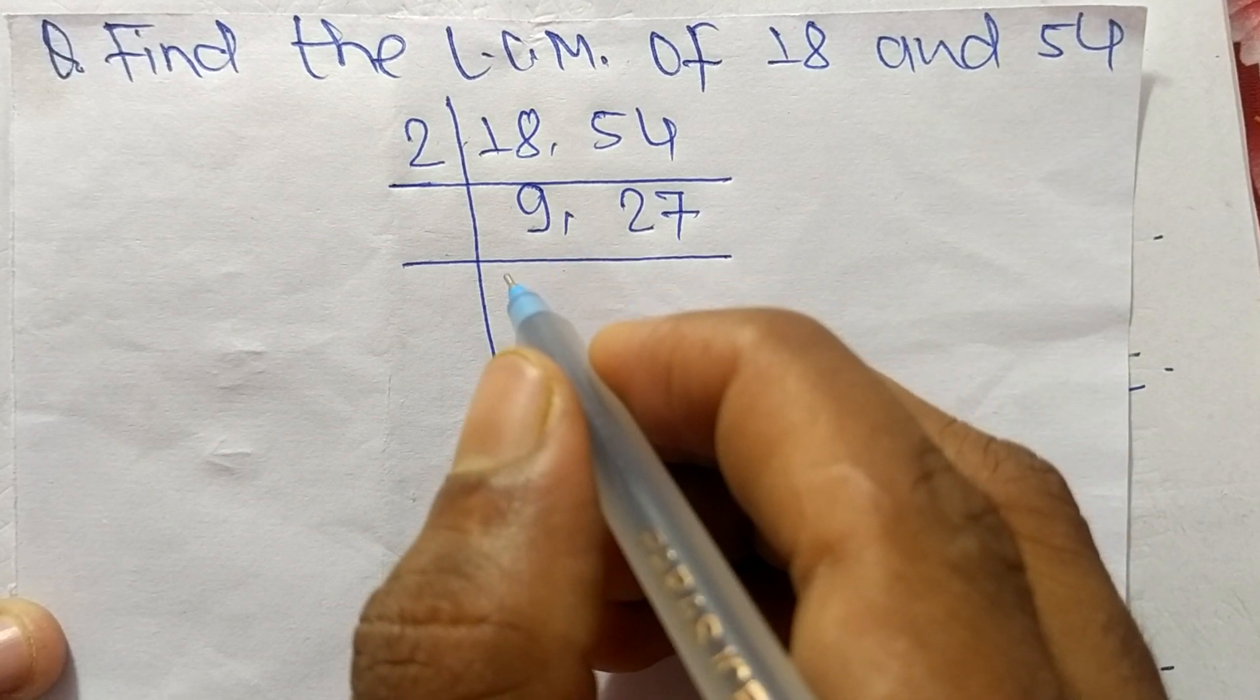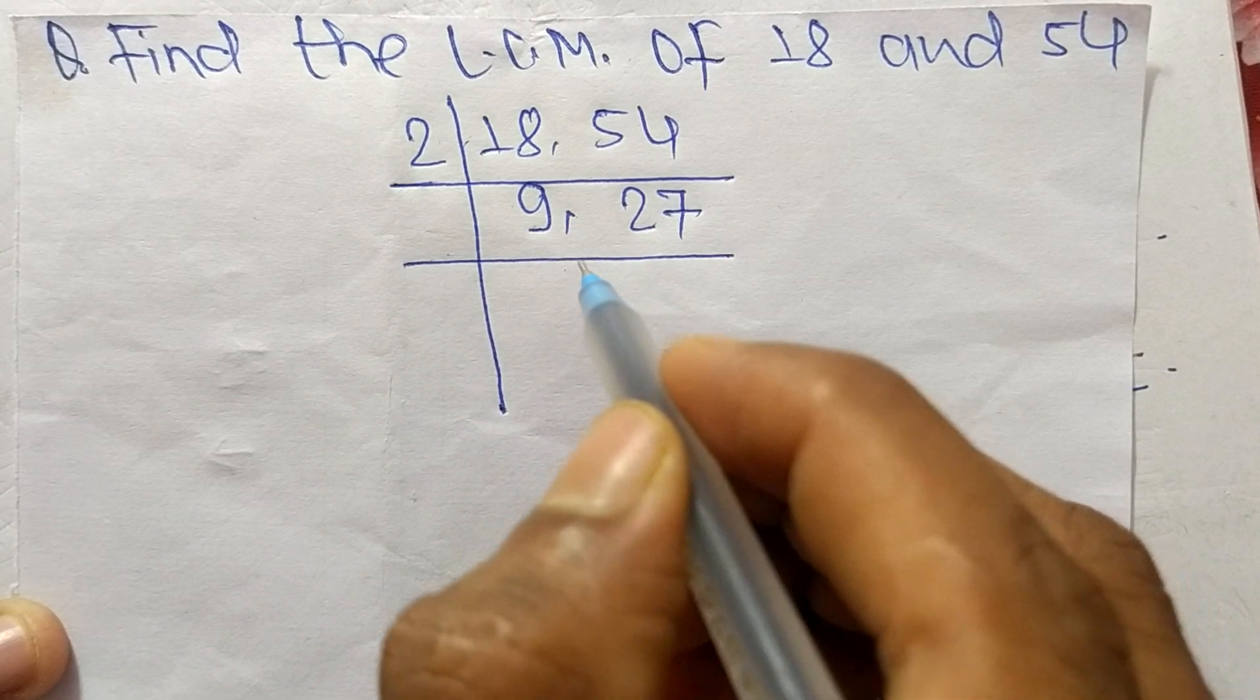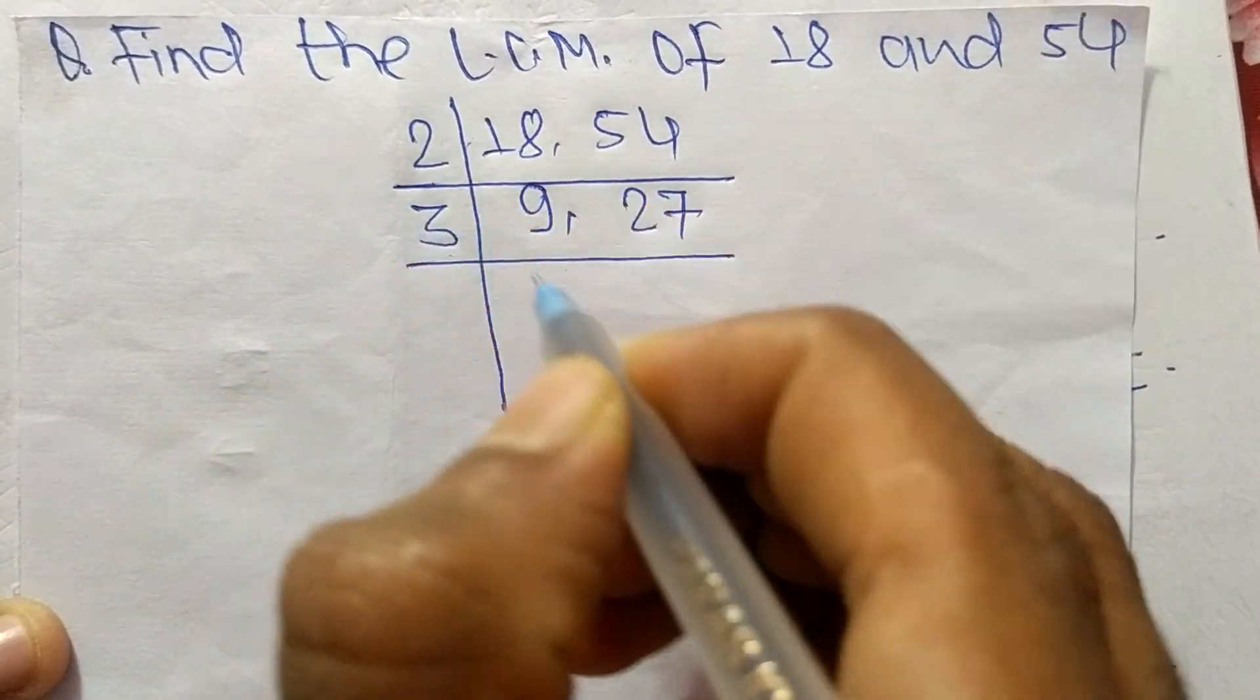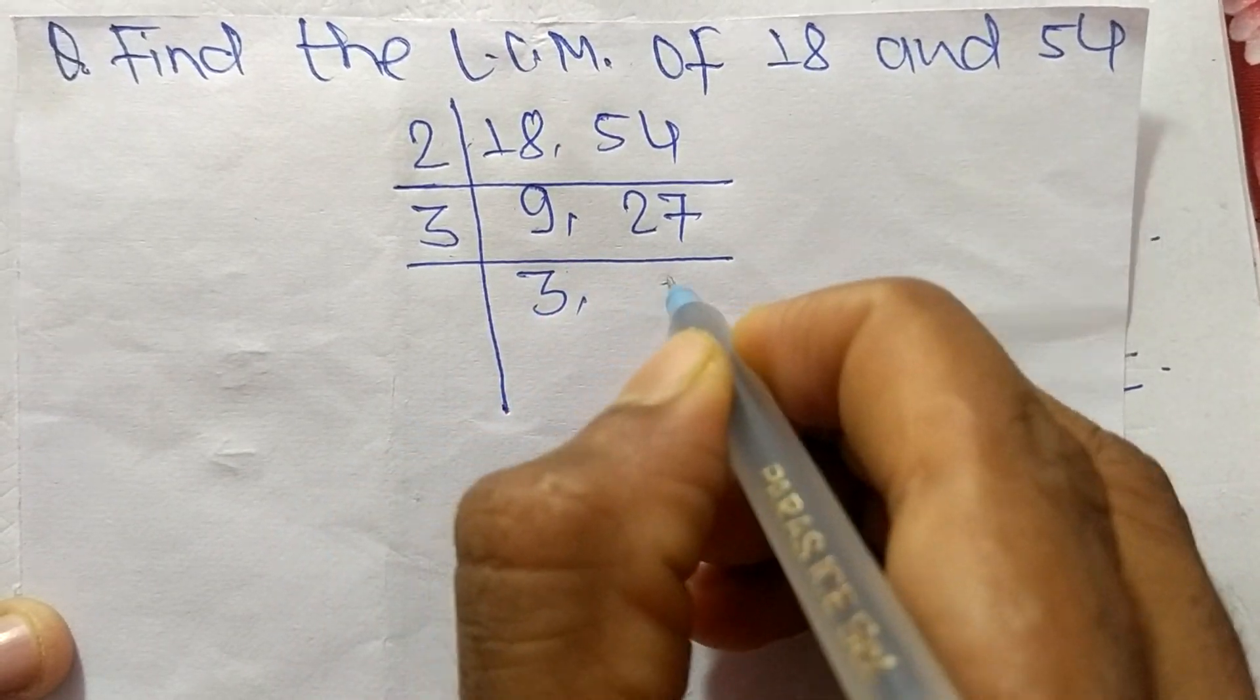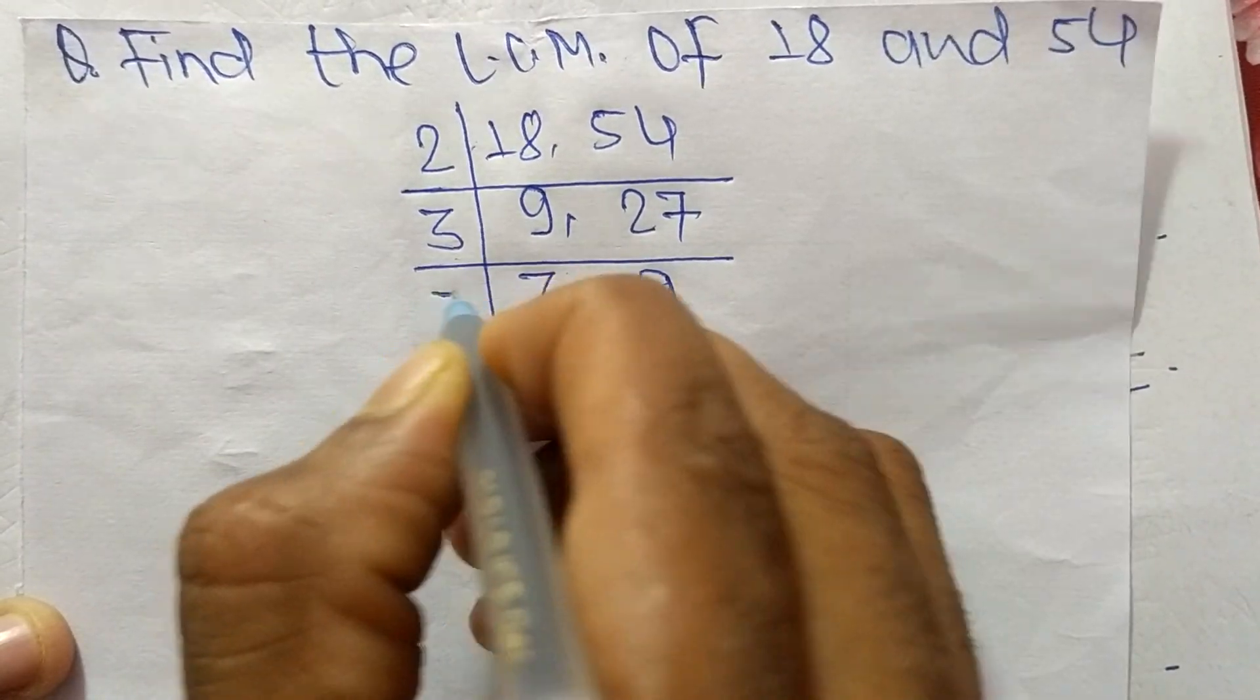So we choose the number greater than 2 that can exactly divide 9 and 27. So the number is 3. 3 times 3 means 9 and 3 times 9 means 27. So again it is divisible by 3.